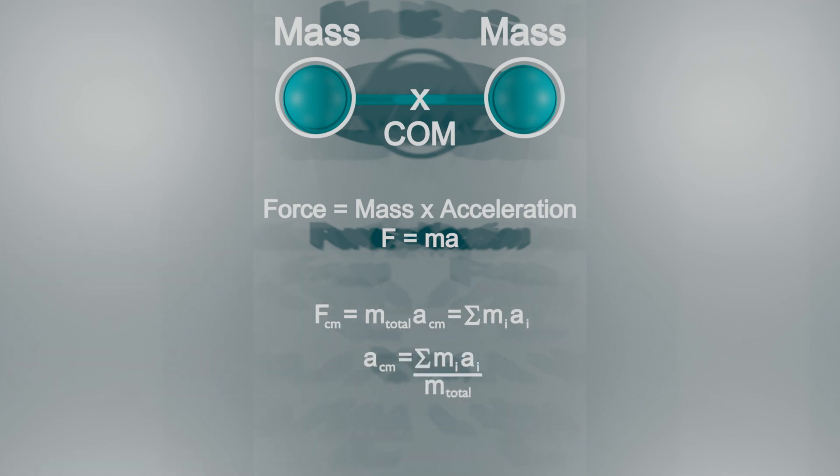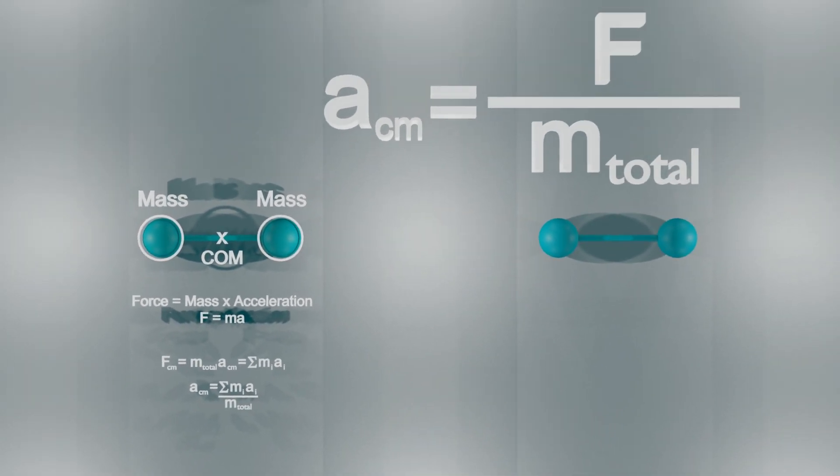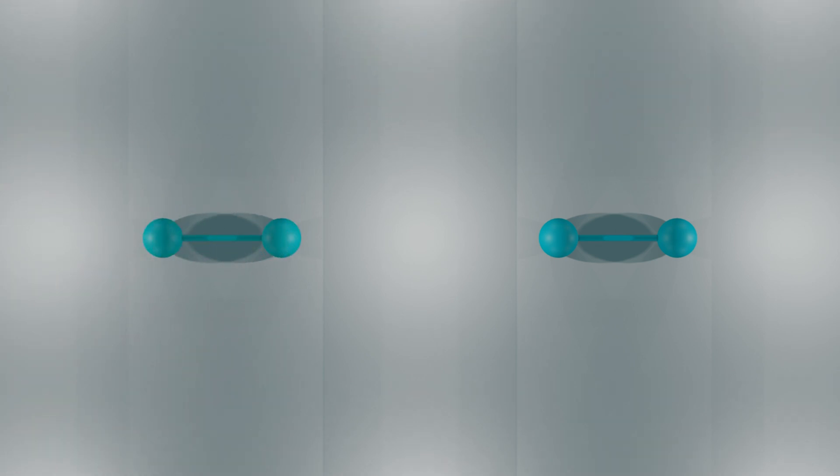By substituting into these equations for both situations, we find that the center of mass of both dumbbells will accelerate at a rate equivalent to the magnitude of the force over the total mass of the system. Since both dumbbells have the same acceleration, their center of mass will travel the same distance.